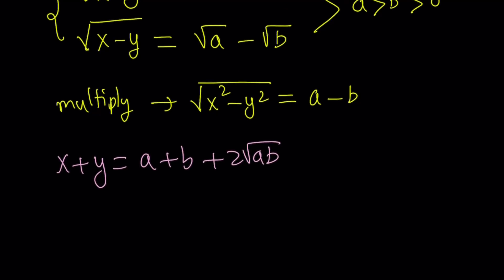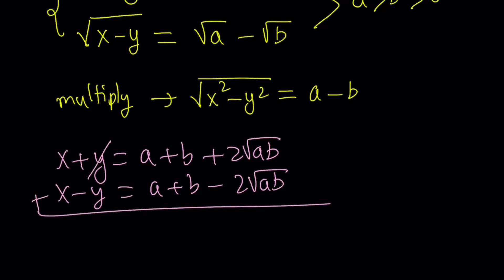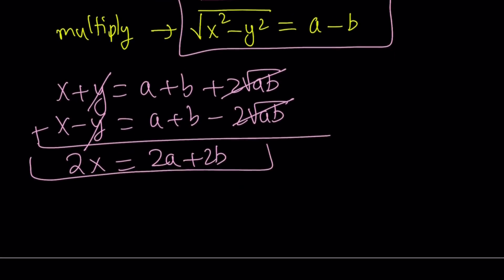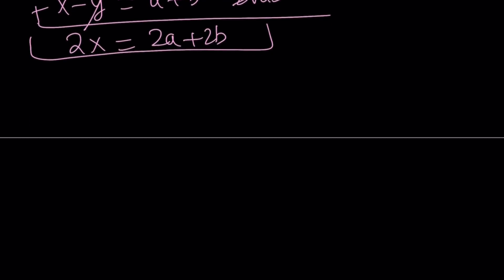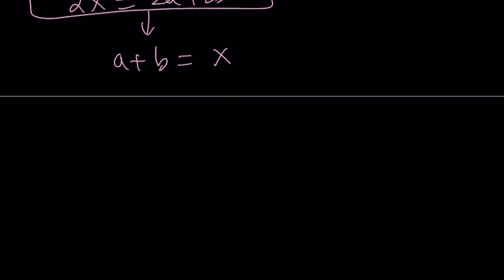The same thing applies to the second one: x minus y becomes a plus b minus two times the square root of ab. By adding these two equations, we eliminate y and the 2√(ab) terms. From here, we get 2x equals 2a plus 2b. So we have one equation: a plus b equals x. And here's the other one: a minus b equals the square root of x squared minus y squared. We said x and y are both positive and x is greater than y, so this is well-defined.